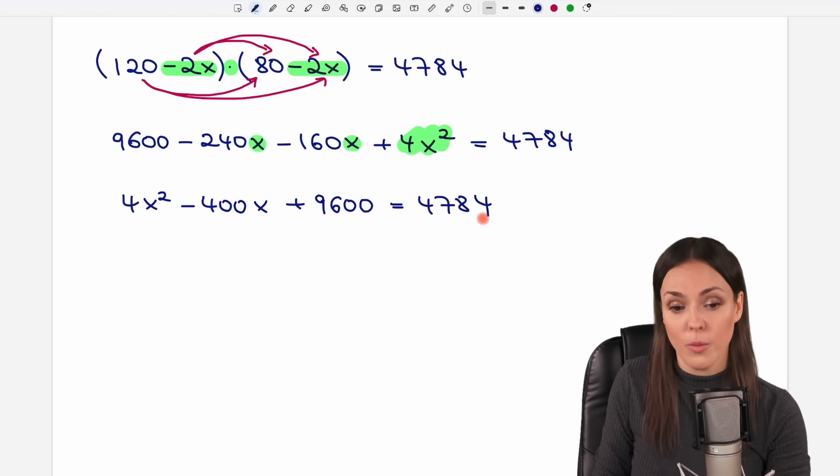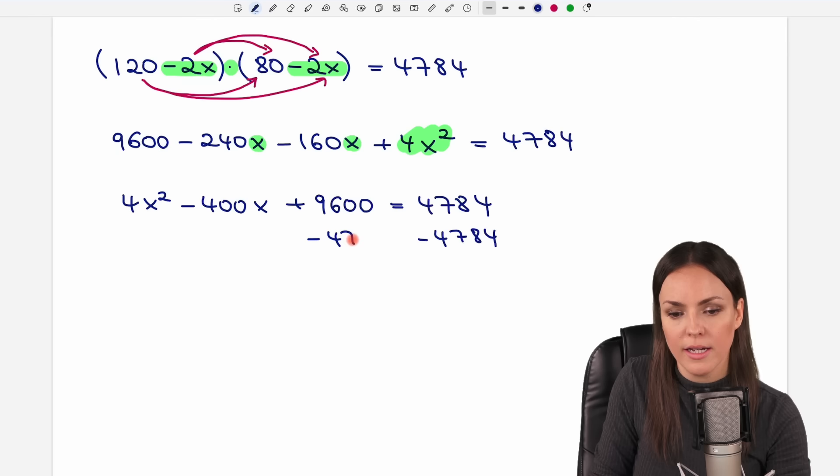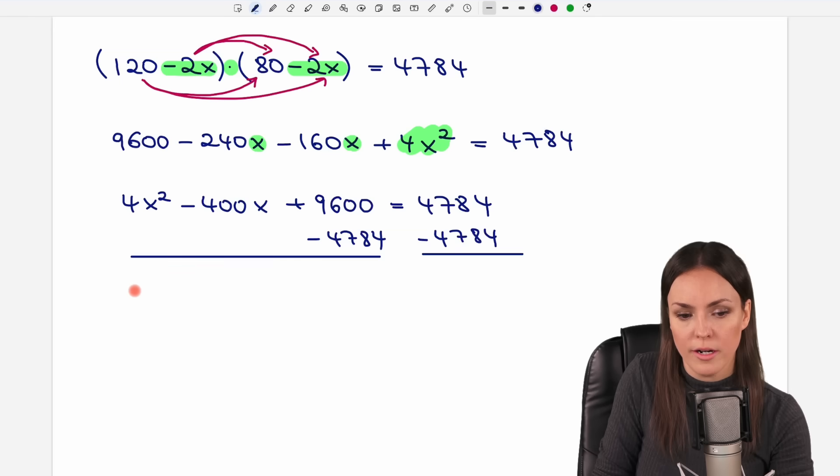We have a quadratic equation here. And we can solve this by bringing everything onto one side. So we take this number and bring it to the left side by subtracting this number here on both sides. So what do we get then?